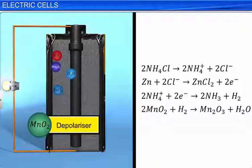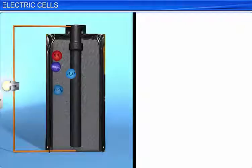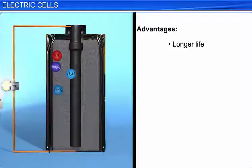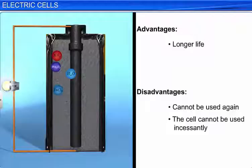The EMF produced by a dry cell is of the order of 1.5 volts. The chemical reactions taking place in the dry cell are very slow, hence the reactions occur for a longer period of time. This gives dry cells a longer life compared to the primitive voltaic cell and other cells. However, this cell cannot be used again once the chemicals in it are exhausted. Besides, the cell cannot be used incessantly, because if the rate of formation of hydrogen in the cell is greater than the rate of its reaction with manganese dioxide, it leads to a restriction in the flow of charges and decreases the current. The use of the cell has to be stopped for a while to give the hydrogen sufficient time to react with the manganese dioxide.